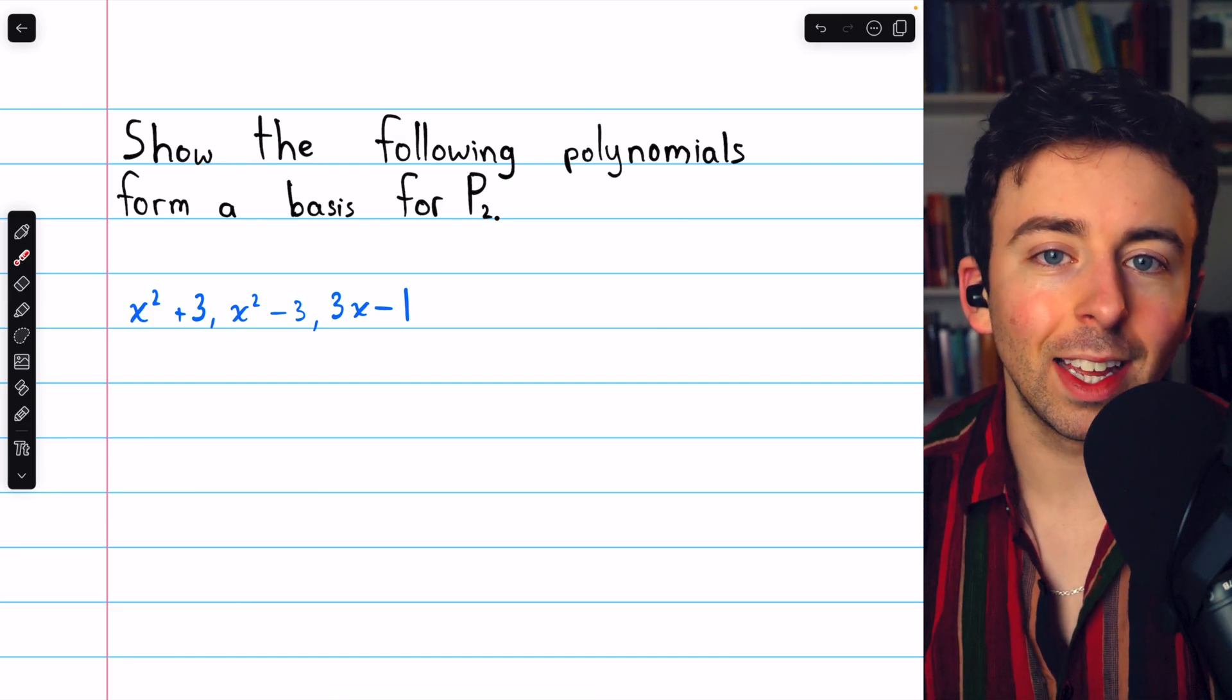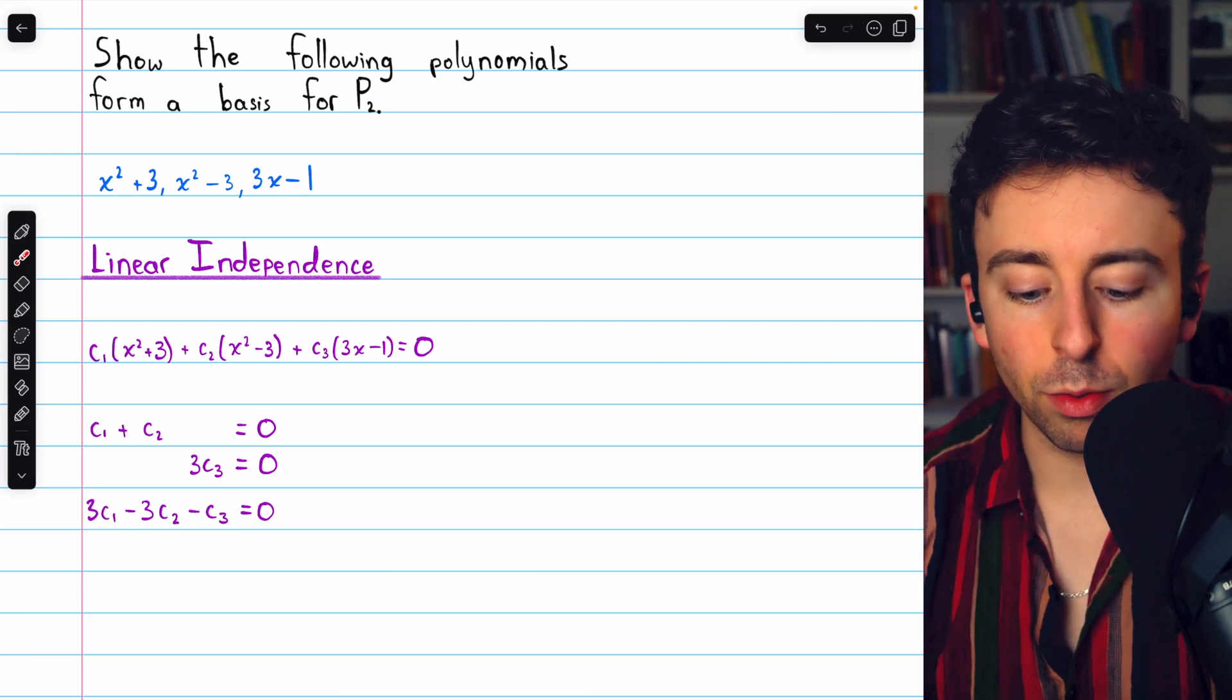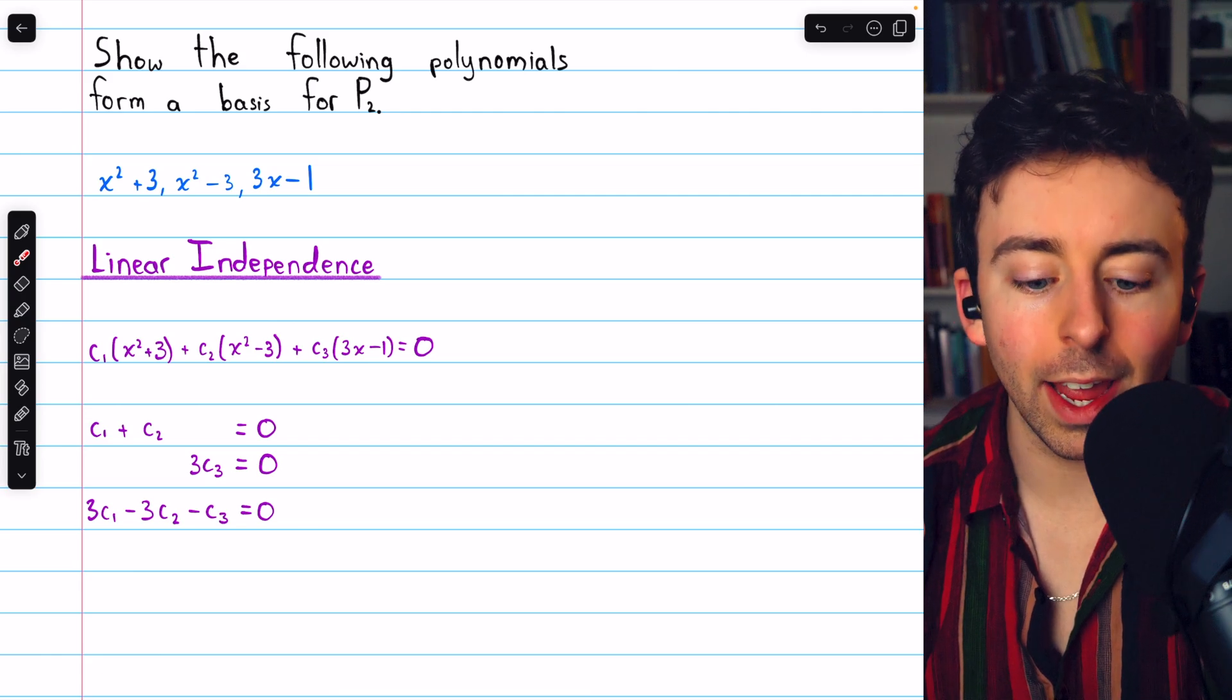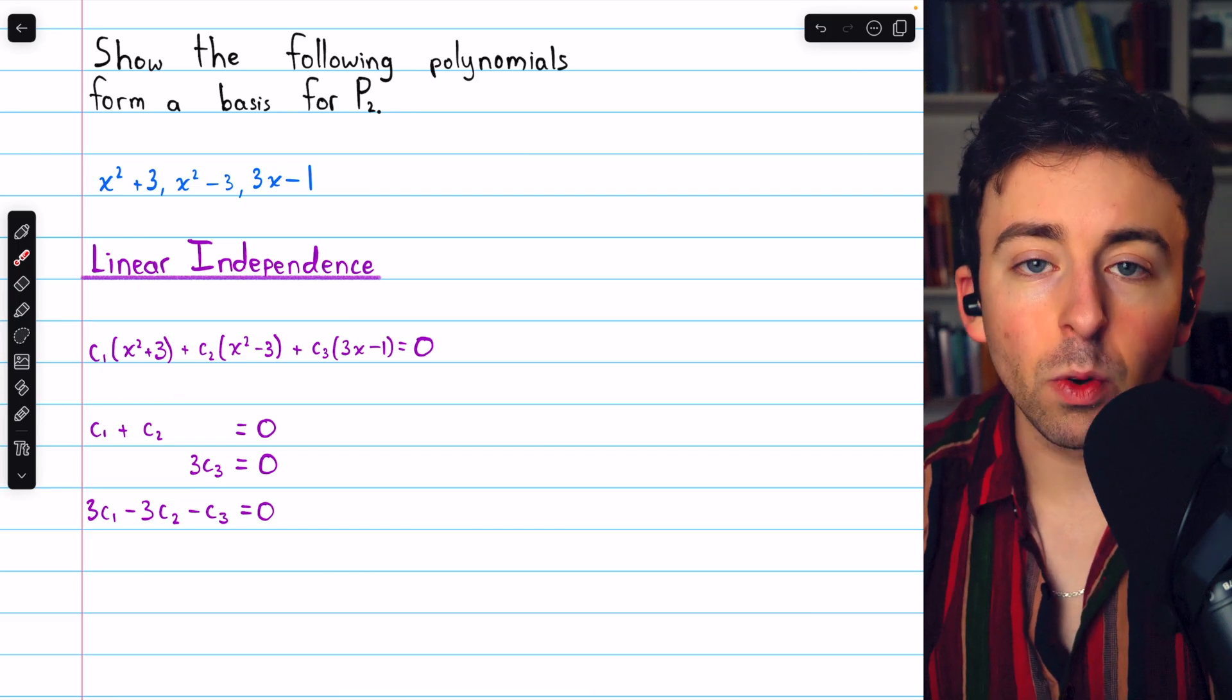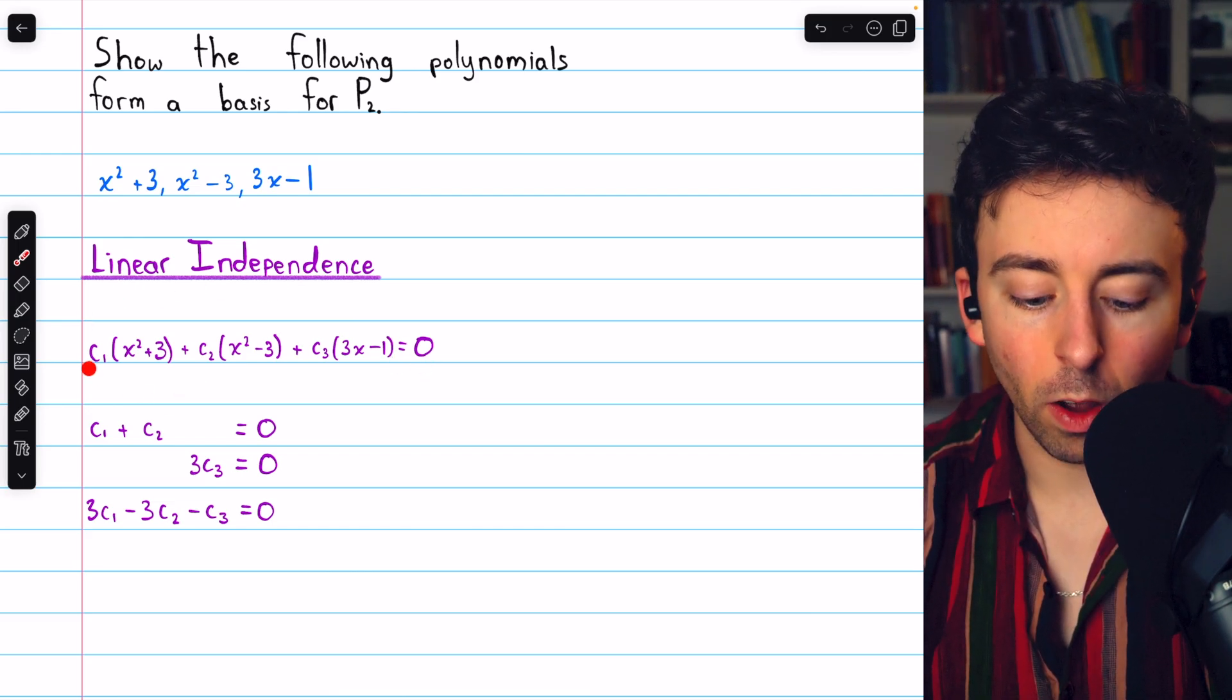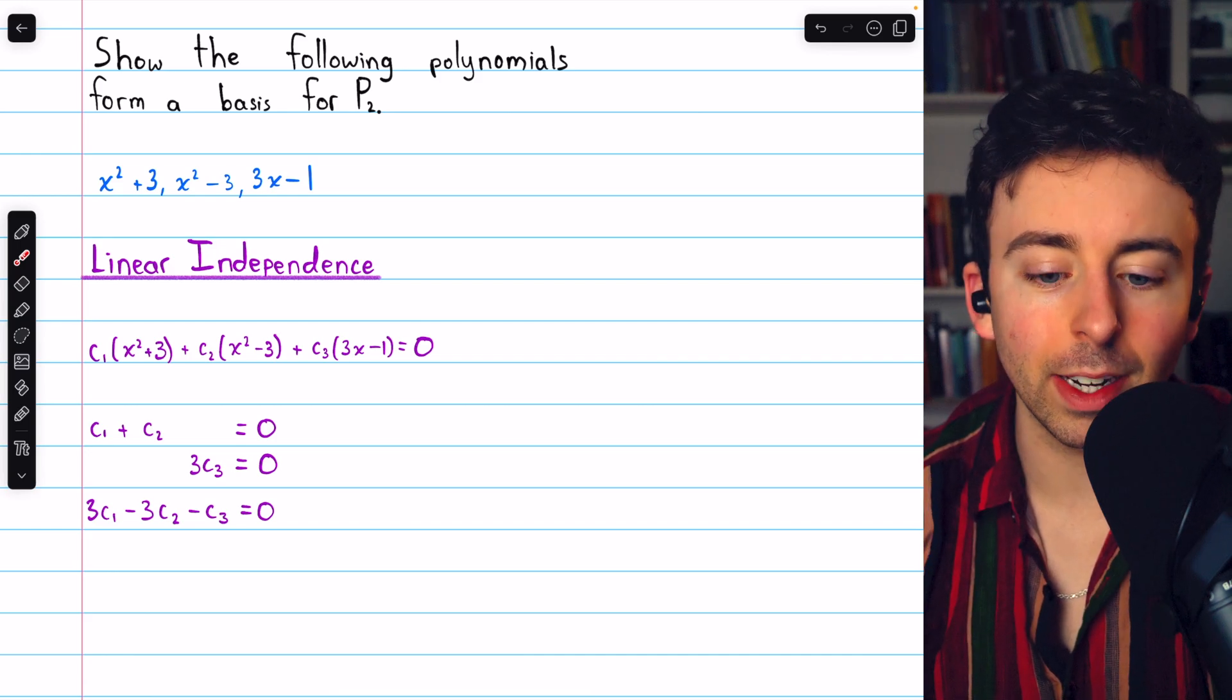Links in the description to lessons introducing these topics if you need to review. Beginning with linear independence, we'll show that these three polynomials are linearly independent in the usual way. We consider an arbitrary linear combination of the three polynomials and we must show that this equals 0 only when all three of these coefficients are 0. So for the vectors, or polynomials in this case, to be linearly independent,